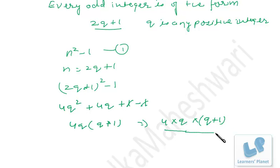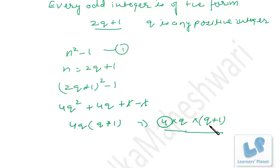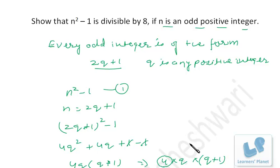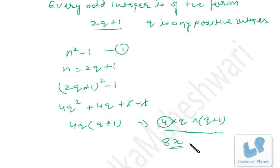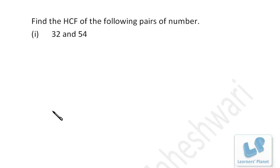Now this expression 4q(q + 1) — we have to prove it is a multiple of 8. Since q is any positive integer, if q is odd then q + 1 is even, and if q is even then q + 1 is odd. So exactly one of q or q + 1 will be an even number. We already have 4, and one of q or q + 1 is even, so 4 times an even number is definitely a multiple of 8. Hence n² - 1 is divisible by 8 if n is an odd positive integer.